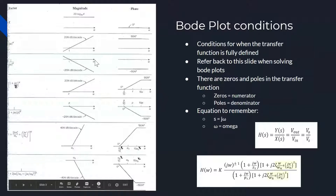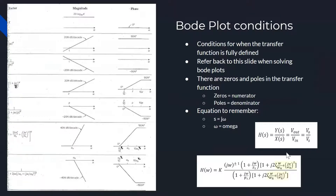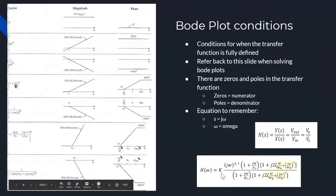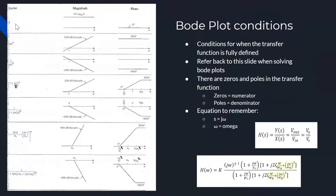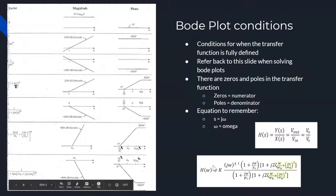This table shows the different conditions that the Bode plot undergoes. As shown in the transfer function, the k, for example, is a constant. So we see in the table for the constant, plugged into the 20 log base 10 of k equation, it is just a straight line on the Bode plot, and it accounts for zero degrees phase. The top portion is denoted as zeros for the numerator, and the bottom portion for the denominator is the poles.